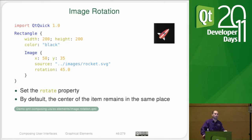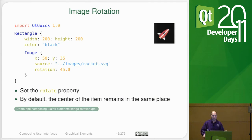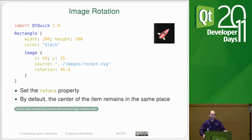QML would be equivalent to the equivalent C++. So if you wrote an application in C++ that used a lot of images and used images to create buttons, they would be comparable in memory footprint. The performance of loading the application is slower because you need to read all the QML files and the JavaScript sections need to be interpreted. If you do really bad things in JavaScript then your application is going to run slowly, just like if you do really bad things in C++.